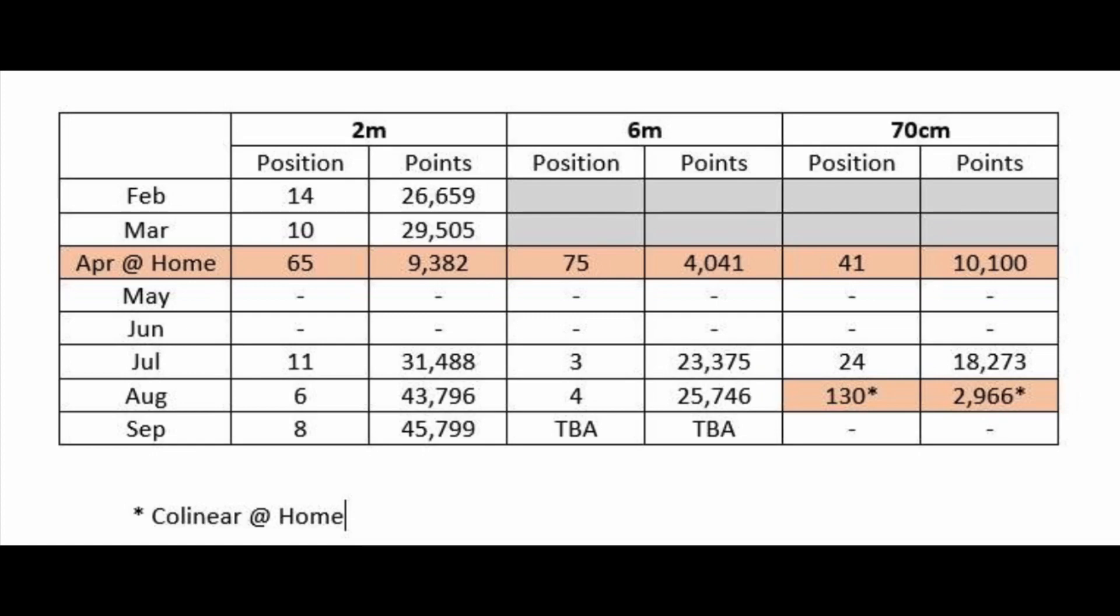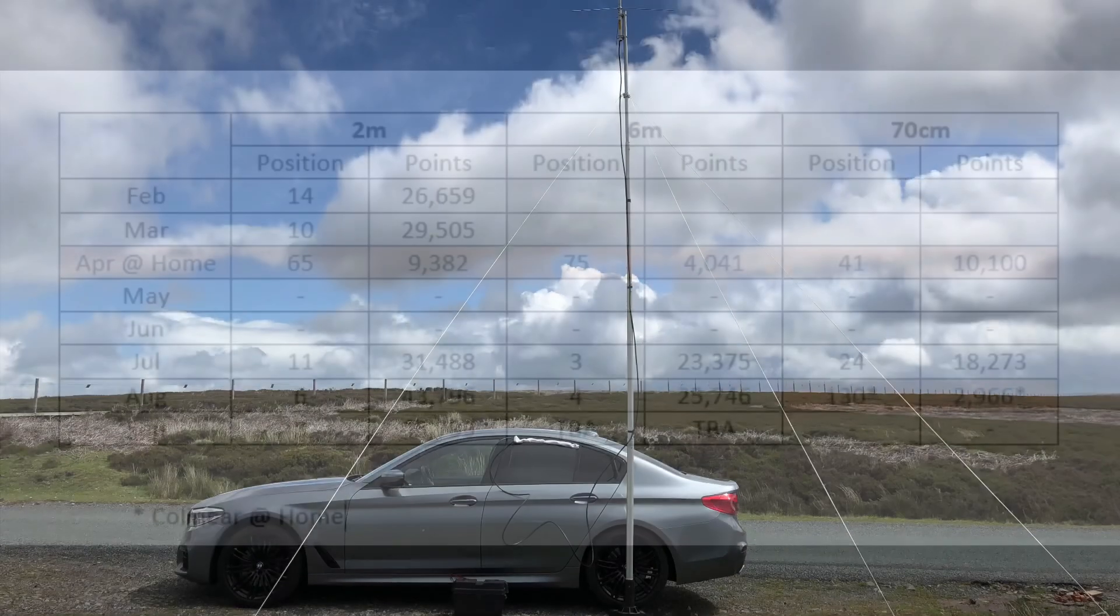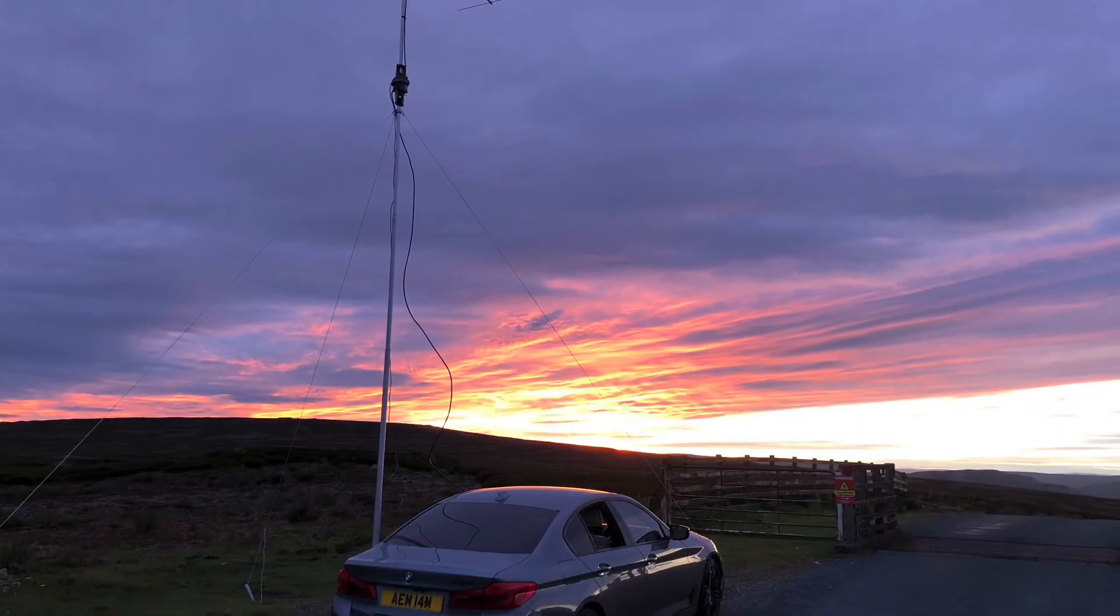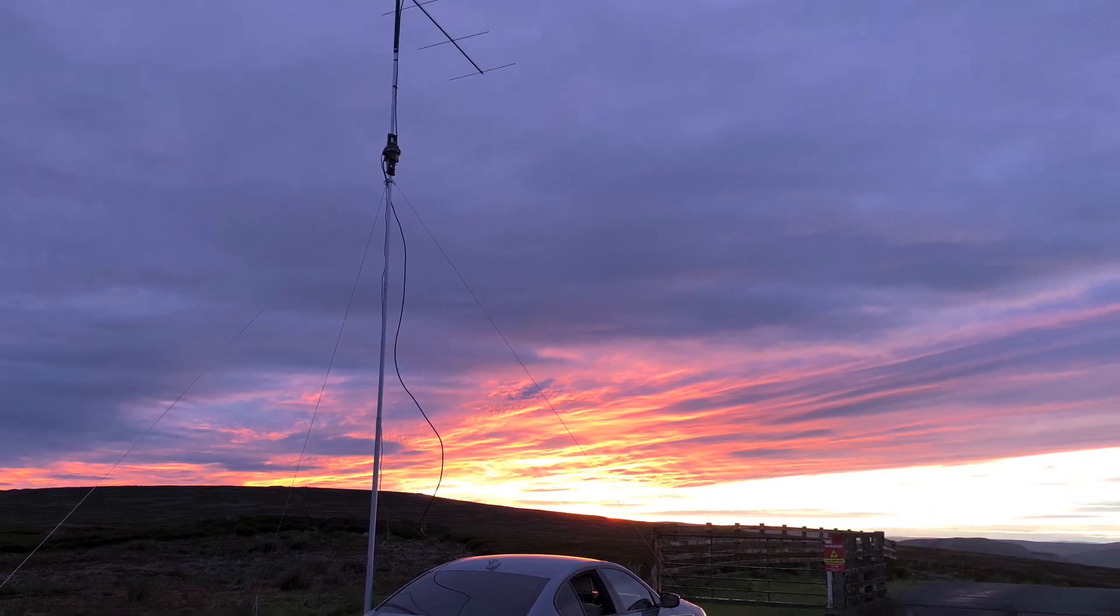As you can see April on 2 meters 65th was the position I got from home but working portable the best I've achieved in August is 6th. Similarly on 6 meters I got 75th position at home in this category but the best I've achieved is 3rd in July working portable. And so on early days on 70 centimeters but you can see similar there between April and July. So it just shows that's empirical evidence so to speak of the difference of your location and how it can affect VHF working.